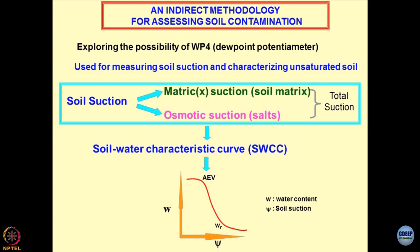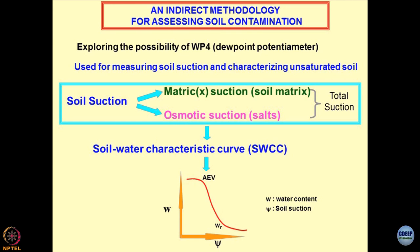The second term on the SWCC graph is WR — residual moisture content, which corresponds to the wilting point in agricultural sciences. If SWCC is fed into software and linked with an actuator, you can do precise irrigation: the moment moisture drops below WR, suction values will be extremely high, and the system can be triggered automatically using in-situ sensors.